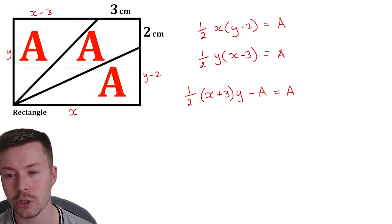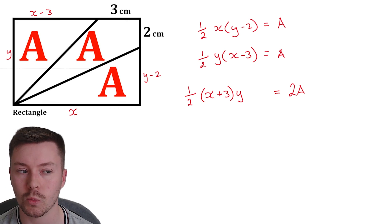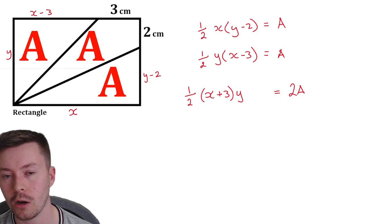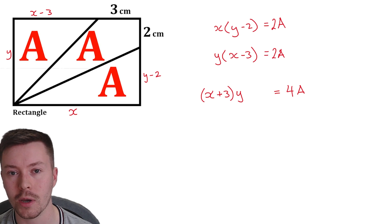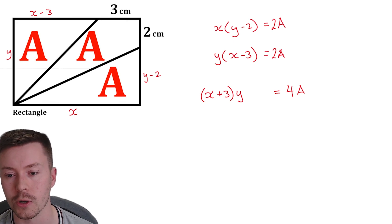Now if I rearrange the area of that trapezium, I get a half brackets X plus three times Y is equal to 2A. What I want to do here at this point is double all of the equations. At the minute we've got a half as a factor of all of them. So if we double everything, the triangles are equal to 2A, and this central quadrilateral is equal to 4A once we've doubled both sides of the equations.